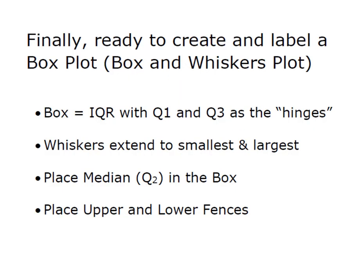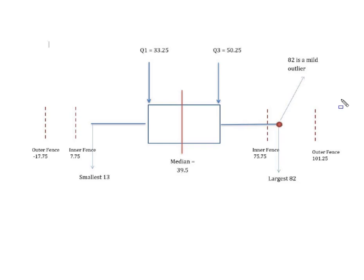Just a few quick items before we do our box plot. Remember that the box of the box plot is literally the IQR where we let Q1 and Q3 serve as the hinges. Our whiskers are going to extend to the left until it reaches the smallest value and to the right for the largest value in the data set. We're always going to place our median inside the box and then finally I'm going to place my upper and lower fences onto my box plot. And through the magic of my computer, bingo, here is my box plot.